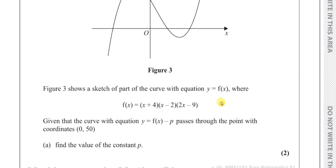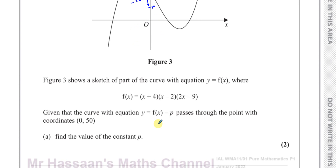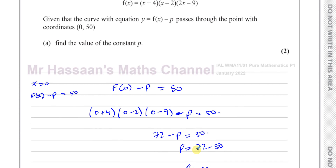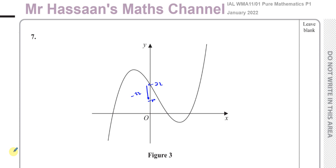Another way to think about it: if you multiply those three brackets together at x=0, that gives you the y-intercept, which is 72. You want to find the value of p that causes the y-intercept to come down to 50. So you have to go down by 22 spaces — the whole curve shifts down by 22. That's thinking about it in terms of transformations: f(x) minus p is a vertical translation. So p must be 22.